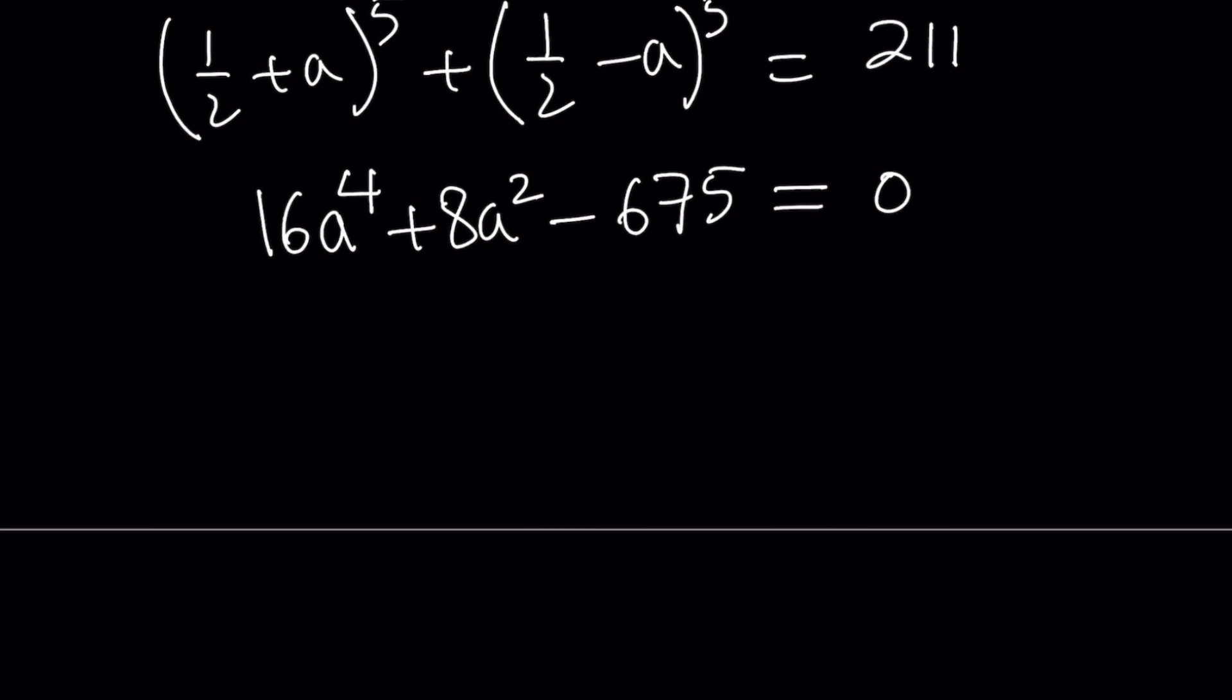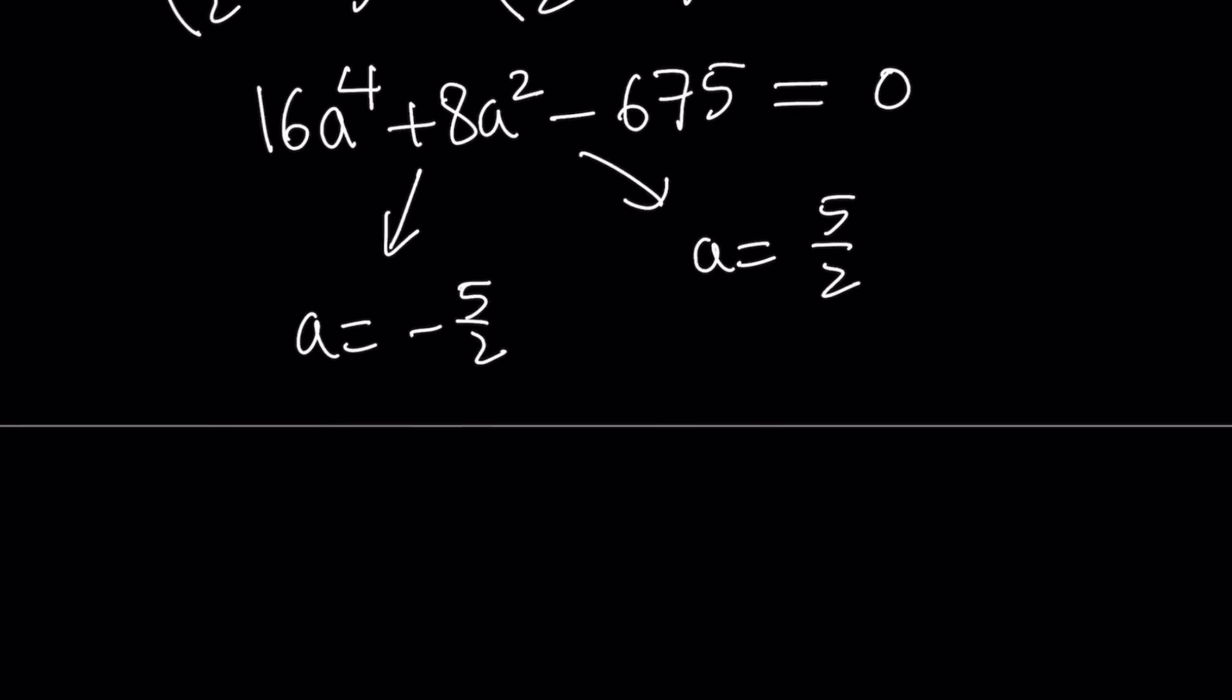And this is kind of like a bi-quadratic. So by calling a squared equals b, you can kind of turn it into a quadratic equation, solve for it, and then set b equals a squared again, and find the a values. But sometimes you get non-real solutions because the square of a real number cannot be negative. So here is what the real roots are: a equals negative 5 halves, and a equals 5 halves.